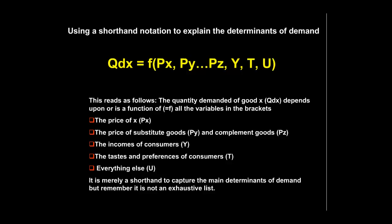Let's think through what would determine the demand for coffee. QDx — the quantity demanded of coffee — depends upon the price of coffee, the price of substitutes like tea (py), the price of complement goods like cream (pz), income, and of course tastes — some nations are more likely to be coffee lovers than others. Other things like advertising also influence demand for coffee. So there are a number of determinants, but we simplify them down into these few key variables.